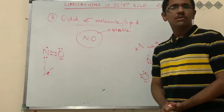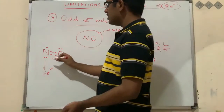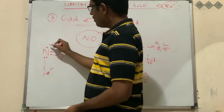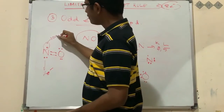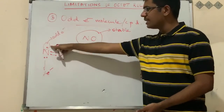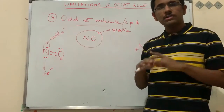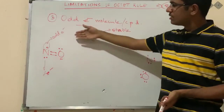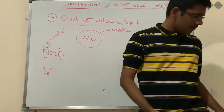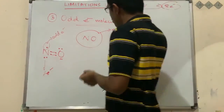Nitrogen has only seven electrons — one odd electron remains unpaired. According to the octet rule, one more electron would be needed for stability, but the compound NO is already experimentally proven to be stable. The octet rule has a limitation: it cannot explain the stability of odd electron compounds or odd electron molecules.